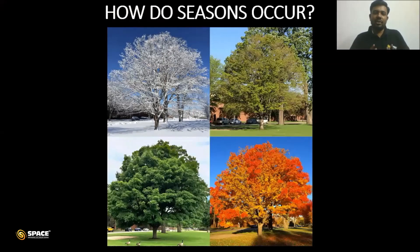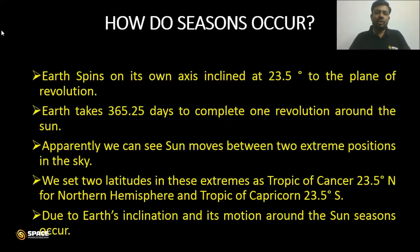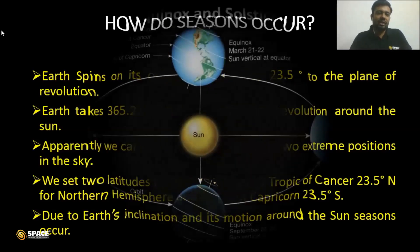How do seasons occur? The earth spins on its own axis inclined at 23.5 degrees to the plane of revolution around the sun. The earth takes 365.2 days to complete one revolution around the sun. Since the earth is tilted, the sun apparently moves between two extreme positions in the sky. We define these as maximum and minimum positions. In the northern hemisphere, we have the Tropic of Cancer at 23.5 degrees north, and in the southern hemisphere, we have the Tropic of Capricorn at 23.5 degrees south. Due to the earth's inclination and its motion around the sun, different seasons occur.